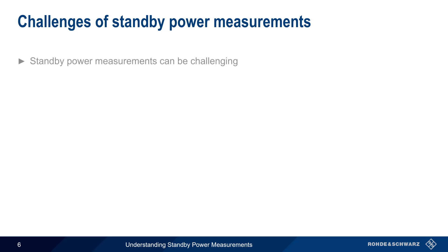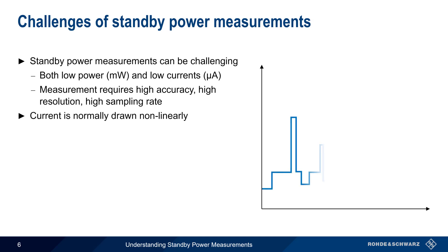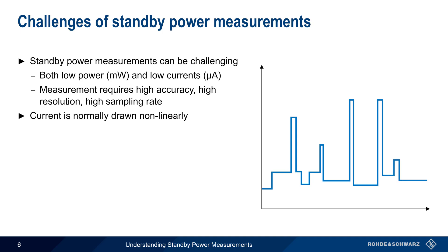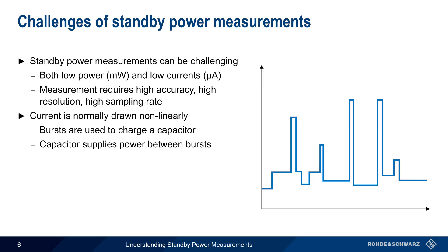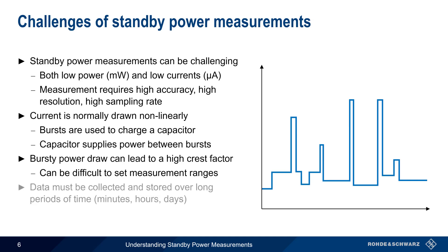The reason why there are requirements for the measuring instrument is that standby power measurements can be quite challenging. Standby power normally involves both low powers and low currents, often in the milliwatt or microamp range. So high accuracy, high resolution, and high sampling rate are needed. Another reason why standby power measurements are challenging is that standby current is almost always drawn in bursts, rather than continuously. These bursts of power are typically used to charge a capacitor, which then supplies the power between the bursts. Drawing power in bursts can lead to a high crest factor, or peak to average ratio, and this makes it difficult to set measurement ranges. And finally, the nature of standby power measurements means that data must be collected and stored over long periods of time, that is, on the order of minutes, hours, or even days.